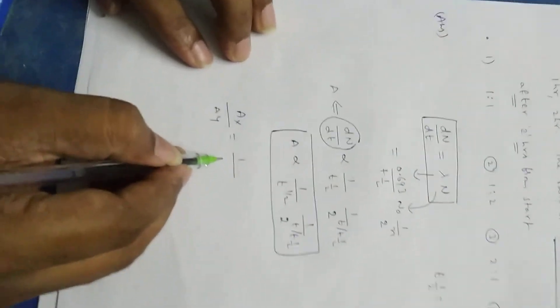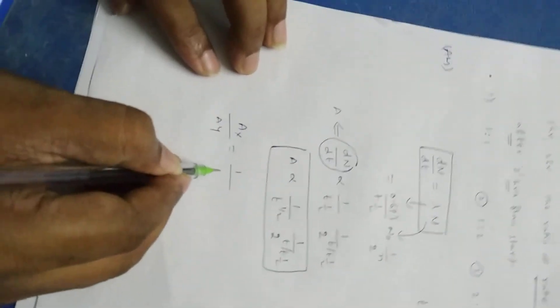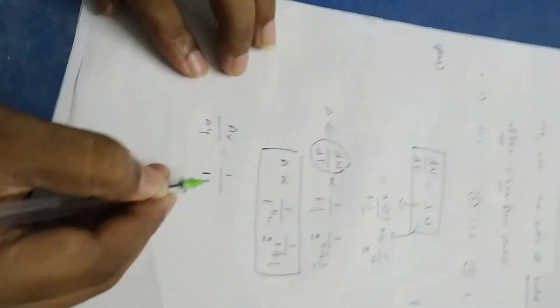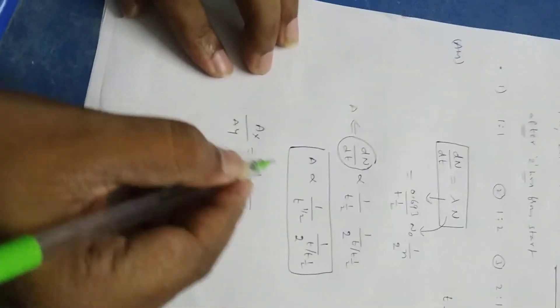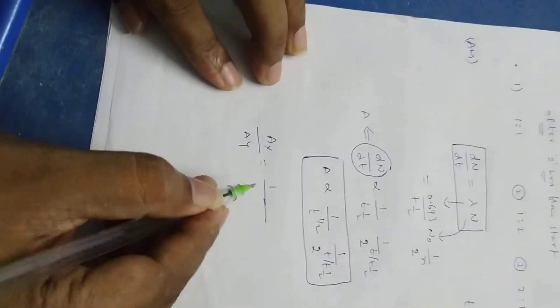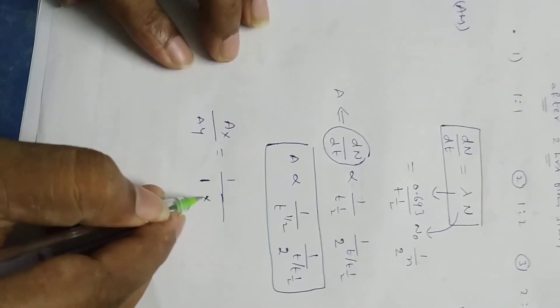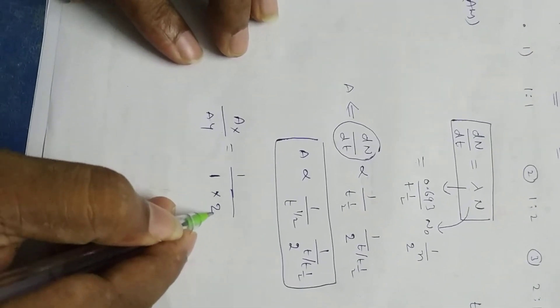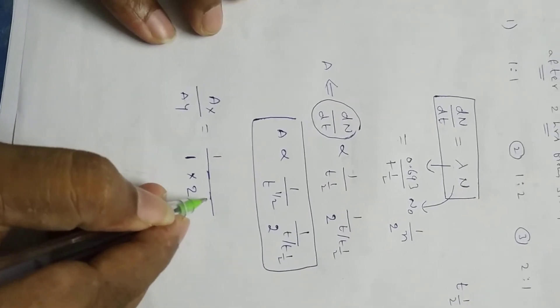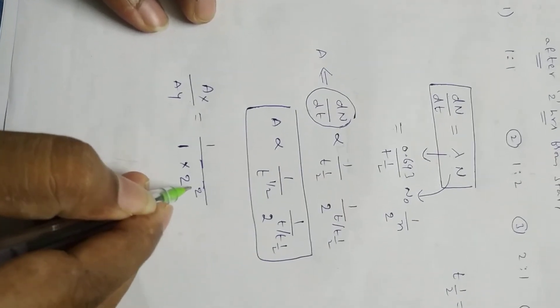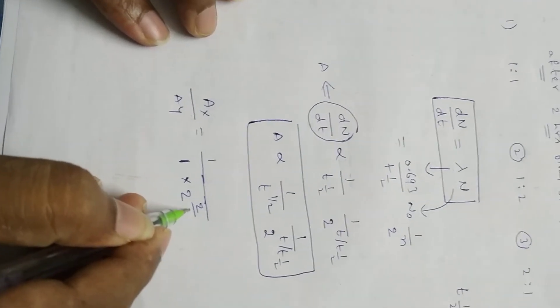For X: half life is given 1 hour, inversely. Total time given is 2 hours, X half life is 1 hour. So 1 over 1 hour, into 2 power 2 by 1.